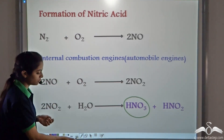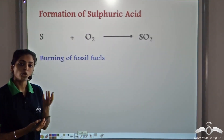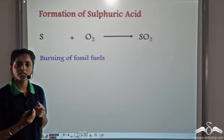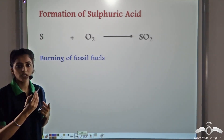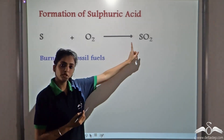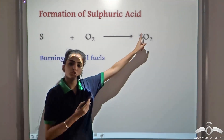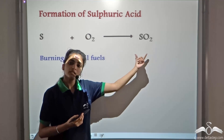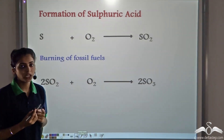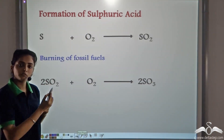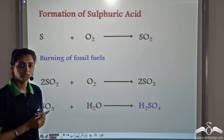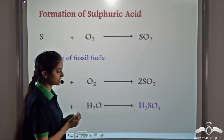Similarly, sulphur is also a major pollutant in the atmosphere. It can be formed by the burning of fuels and from industrial exhausts. When we get sulphur, it reacts with oxygen to form sulphur dioxide. This sulphur dioxide further reacts with oxygen to form sulphur trioxide, and when this comes in contact with water, it forms sulphuric acid.